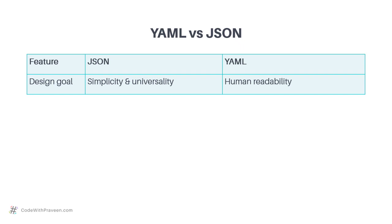The first feature is the design goal of each language. In the case of JSON, the main goal is simplicity and universality, meaning JSON should be usable across programming languages and simpler to use. That's why you see JSON being used in many web applications.